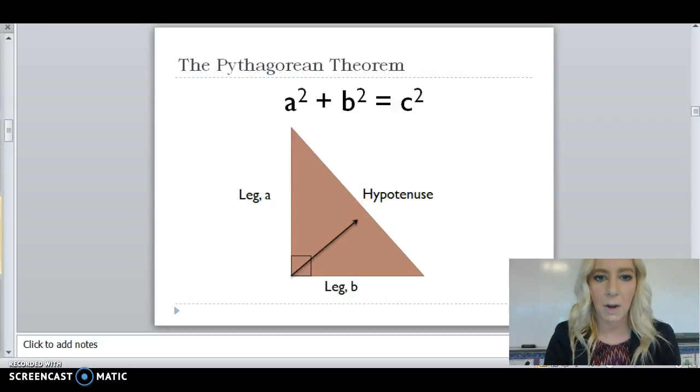So this is the theorem. A squared plus B squared equals C squared. So the length of side A squared plus the length of side B squared equals the length of side C squared. Where A is a leg, B is the other leg, and C is the hypotenuse.